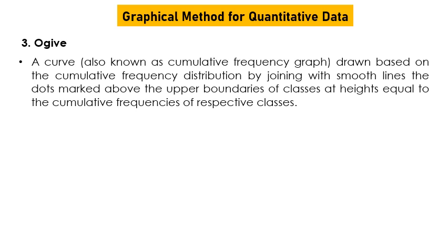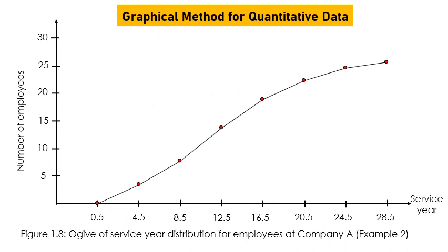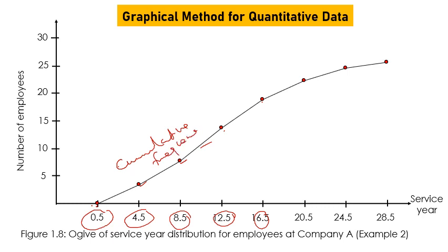An ogive, also known as a cumulative frequency graph, is drawn based on the cumulative frequency distribution by joining with a smooth line the dots marked above the upper boundaries of classes at heights equal to the cumulative frequency of each respective class. The x-axis uses boundaries such as 2.5, 4.5, and the y-axis shows the cumulative frequency (frequency terkumpul).